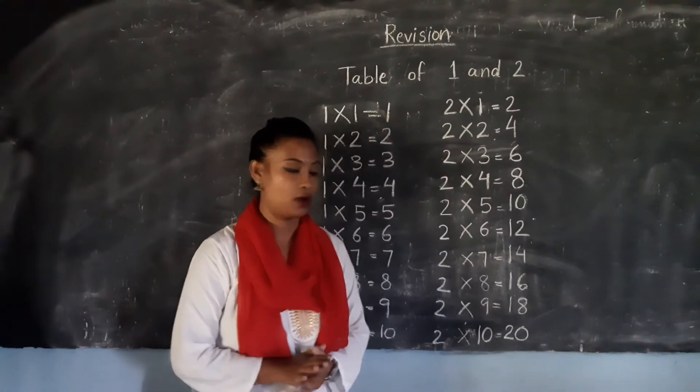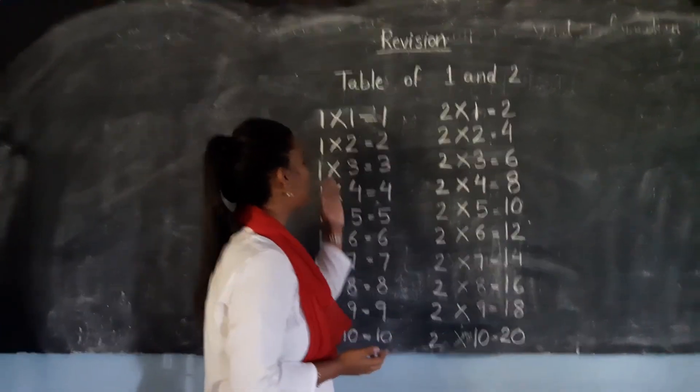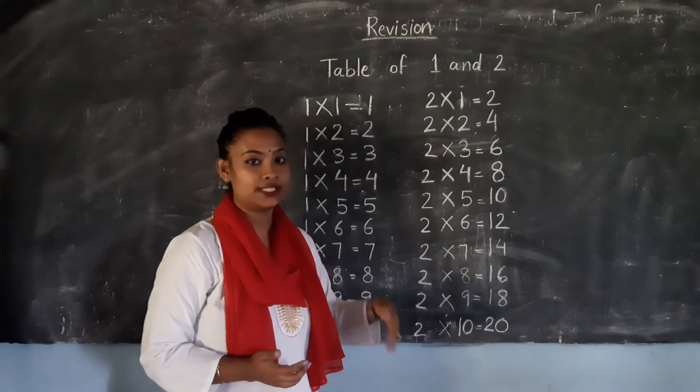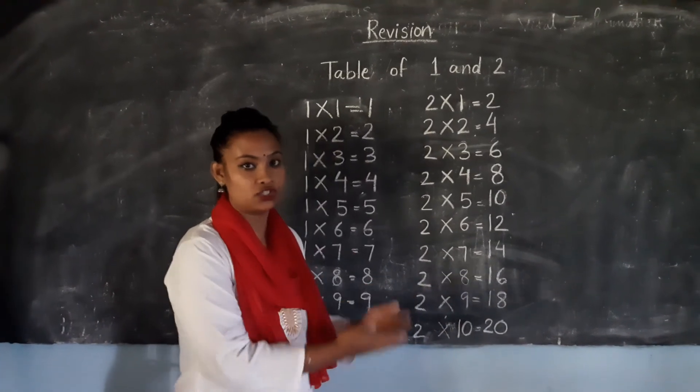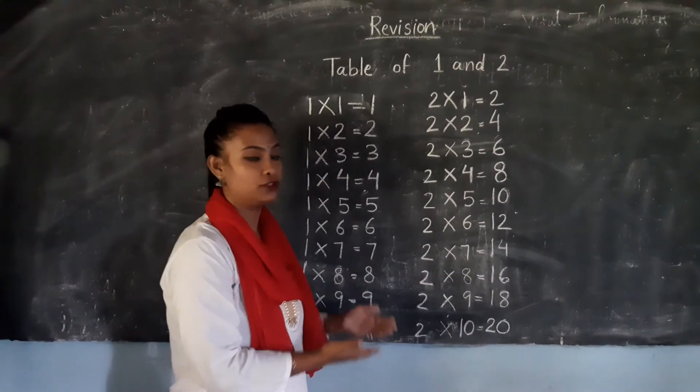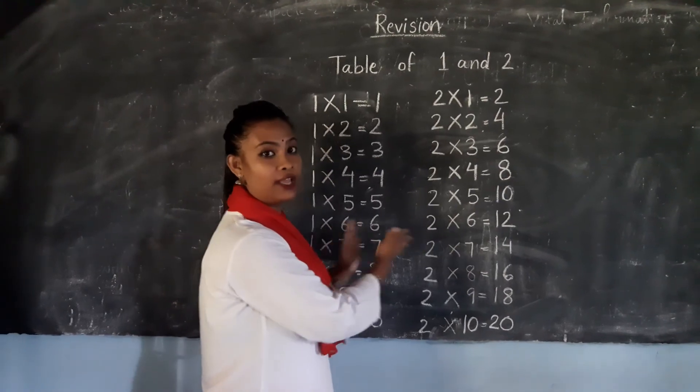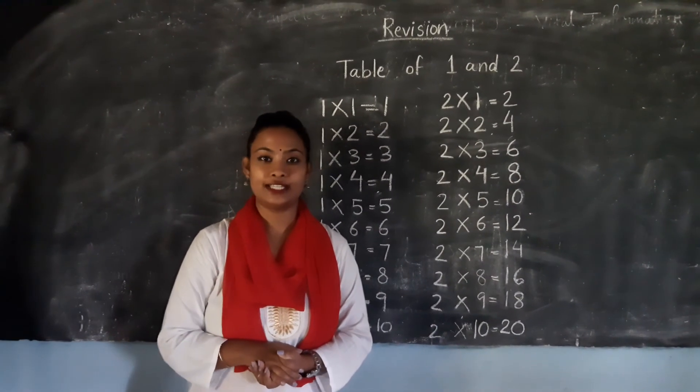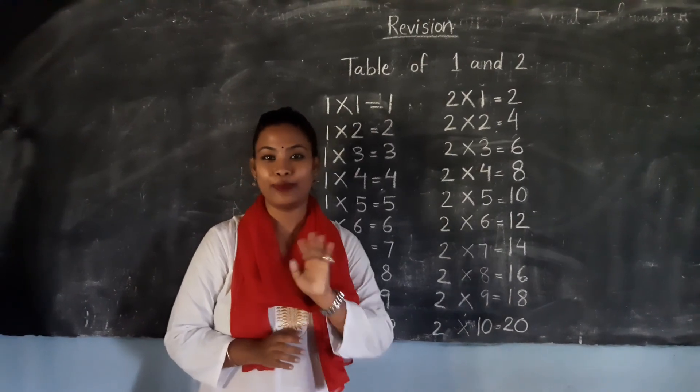So what you need to do now is you have to write this table of 1 and 2 in your develop copy. I will send you the details with page number and I request all of you to write table of 1 and 2, okay? So we will meet you in next class. Till then stay safe and stay healthy. Bye!